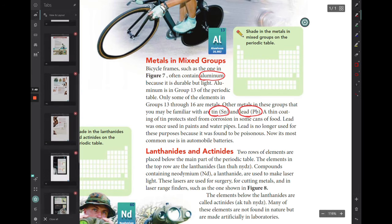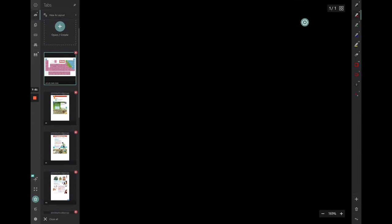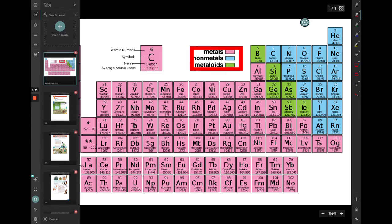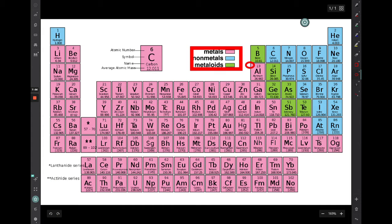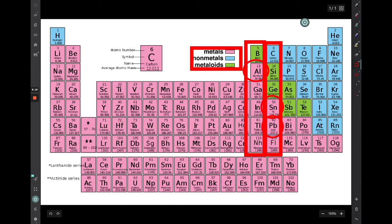Here is aluminum. Here's tin. And here's lead. So notice that when we look at the group that they are in, for example, that group, the entire group is not metals. We have boron which is a metalloid. If we look at this group, tin and lead are part of a group that also has non-metals and metalloids in it as well.